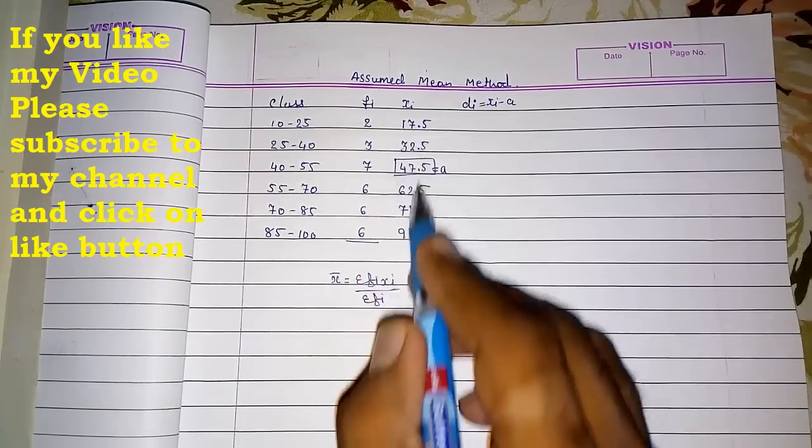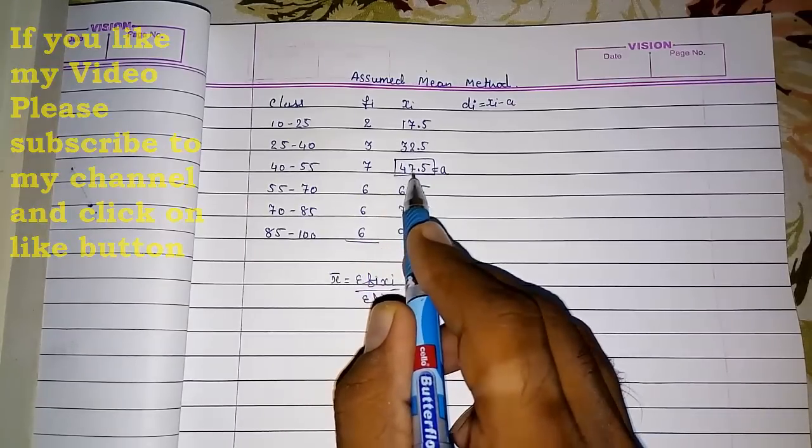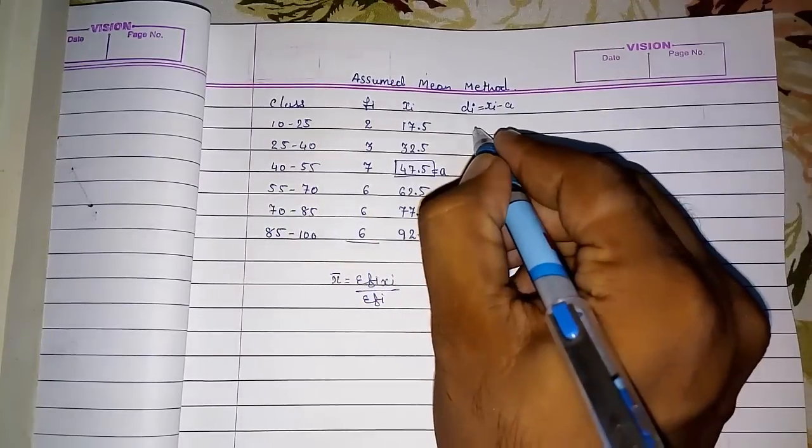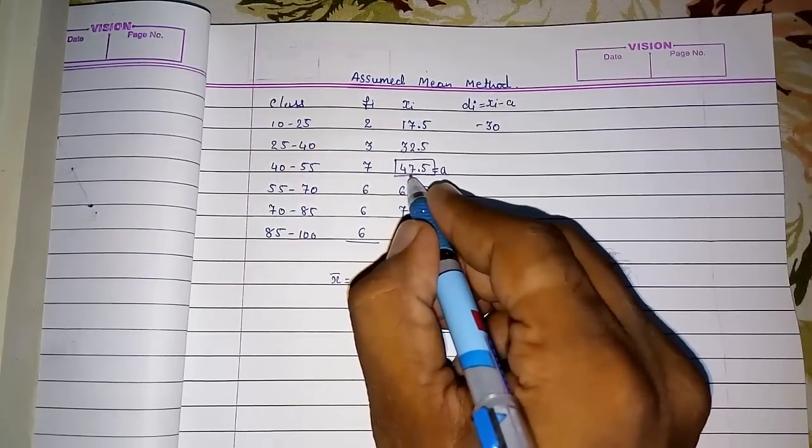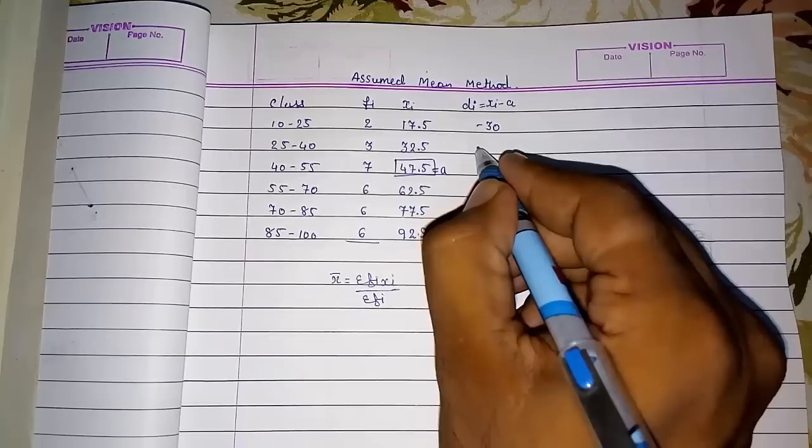Can we subtract? 17.5 minus 47.5, yes, it will be minus 30. Then 32.5 minus 47.5, you will get minus 15.